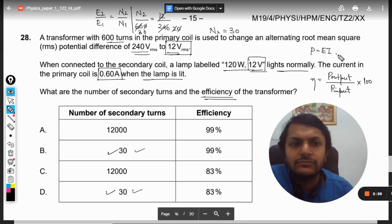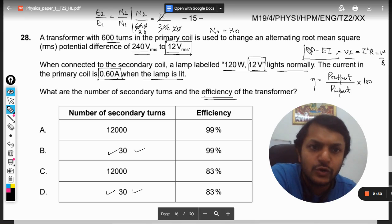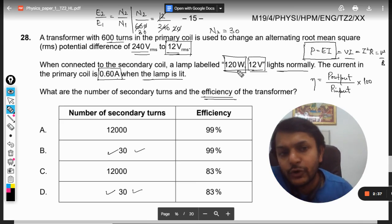Now for power, we are going to use the formula E into I. That is, power is equal to V into I. If you remember, there are three formulas: I squared R, V squared by R, and V into I. So I have converted it into E into I here.